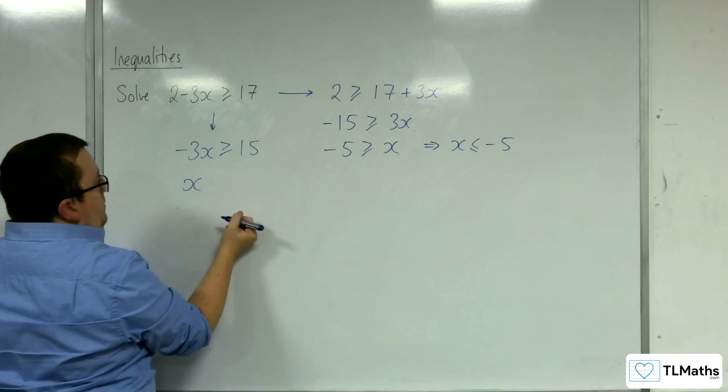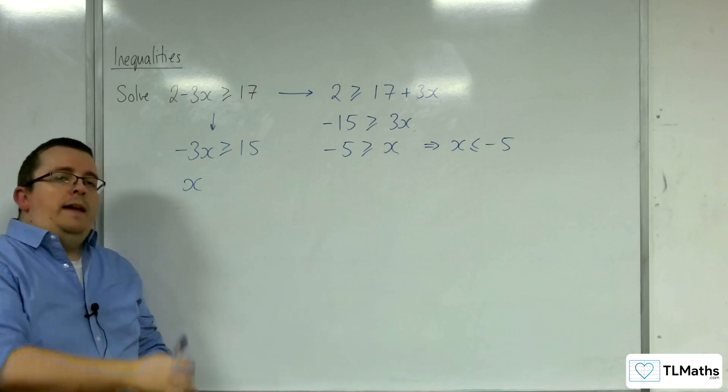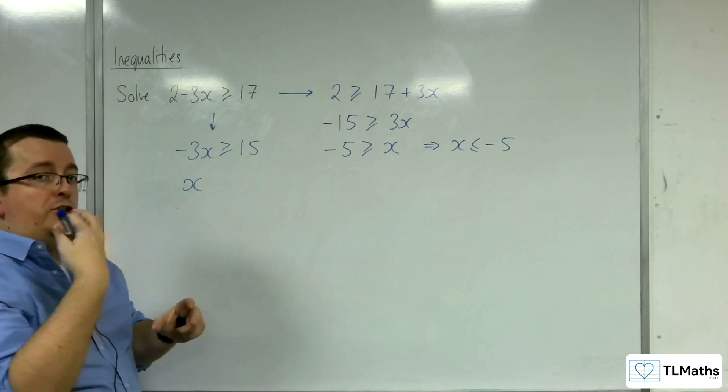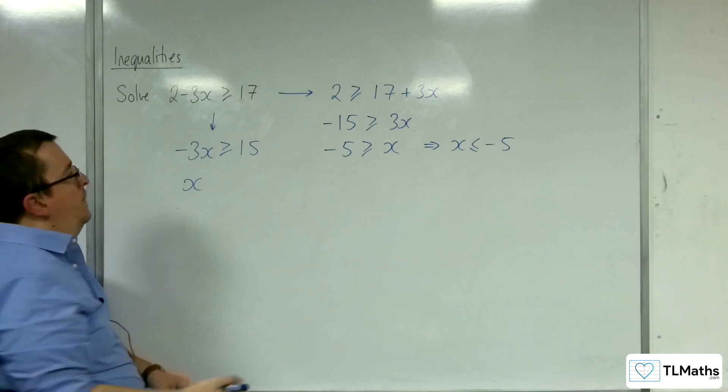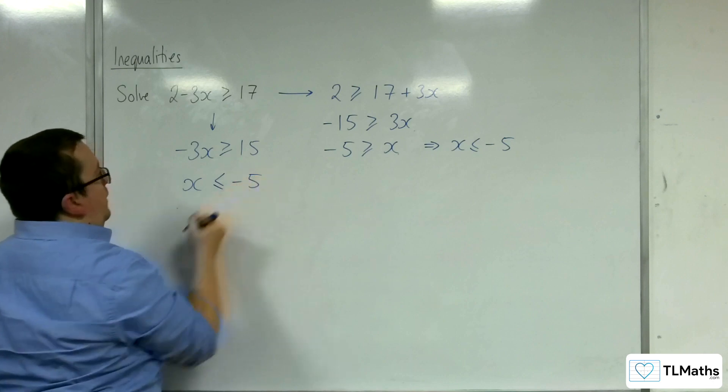Now, when you do that, when you divide or multiply by a negative for an inequality, it reverses the direction of the inequality symbol. And so, this will become x is less than or equal to minus 5.